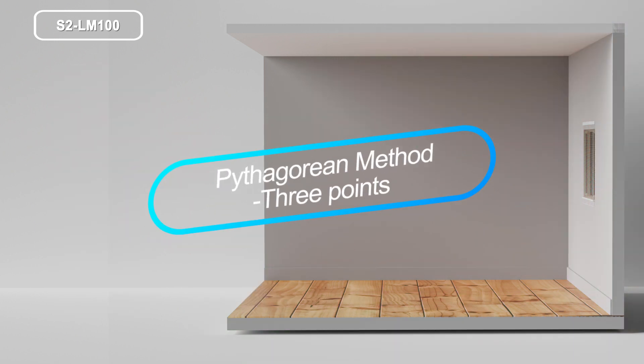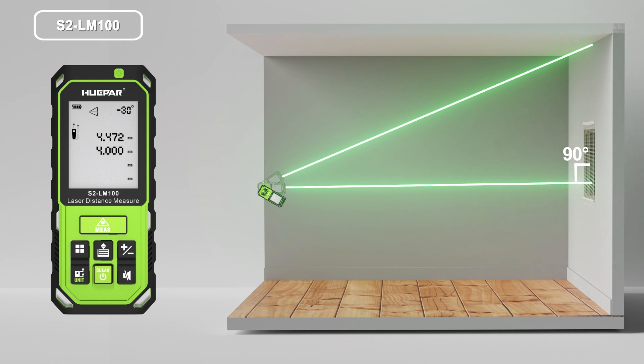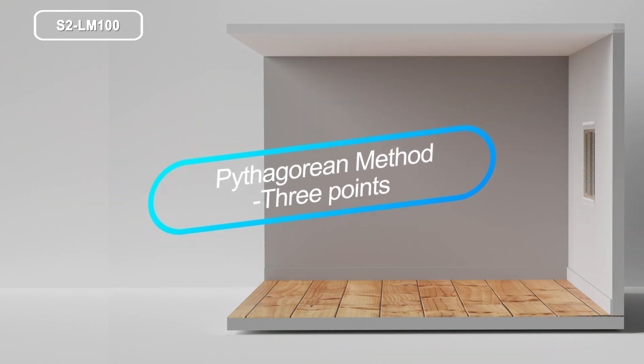Pythagorean method three points. Press the bottom five times to activate the function. The symbol appears in the function field on the display. Take measurements with the three points in sequence. The height of the object is calculated and displayed on the summary line.